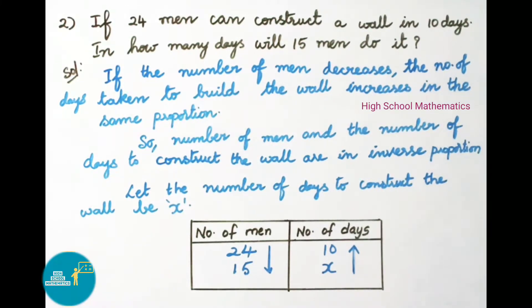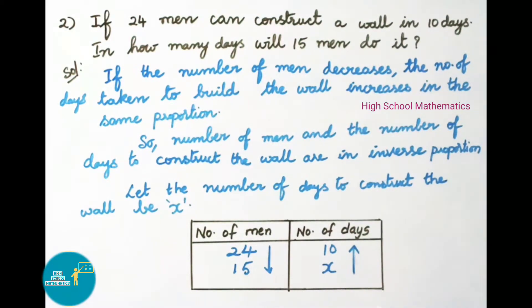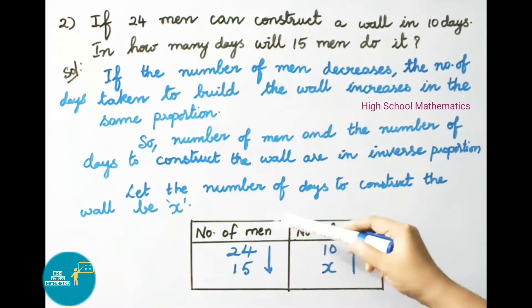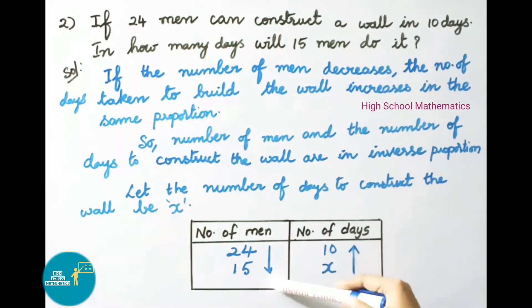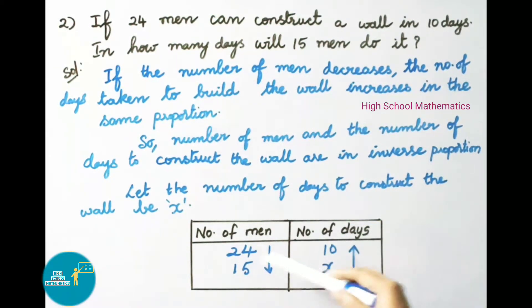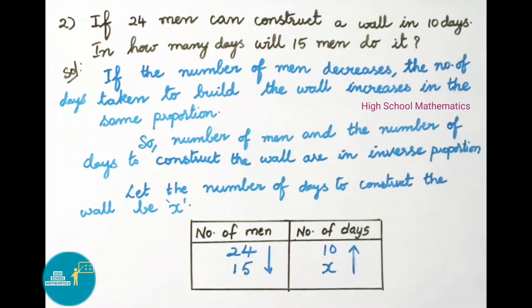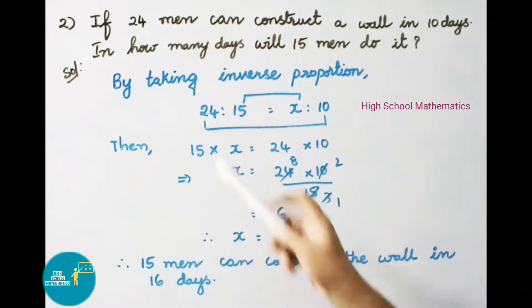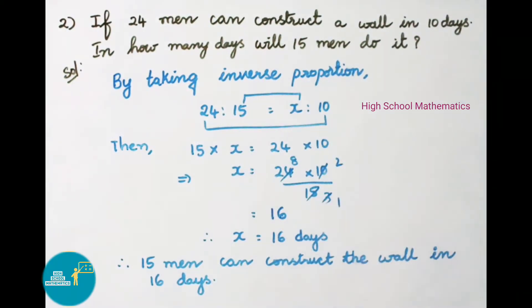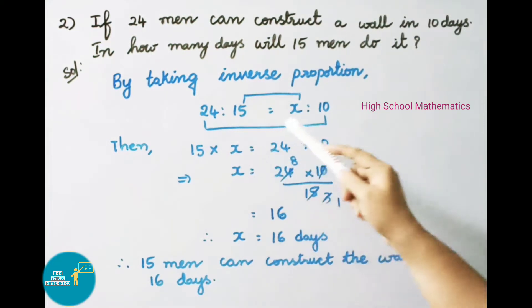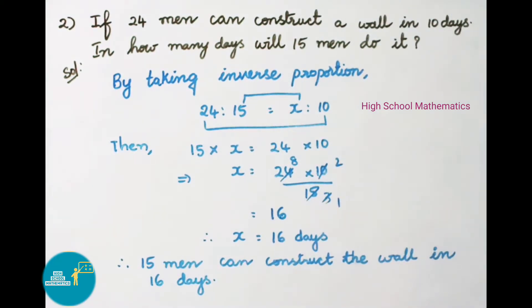The number of men are decreasing, so the number of days will be increasing. For inverse proportion: 24 is to 15 equals x is to 10.